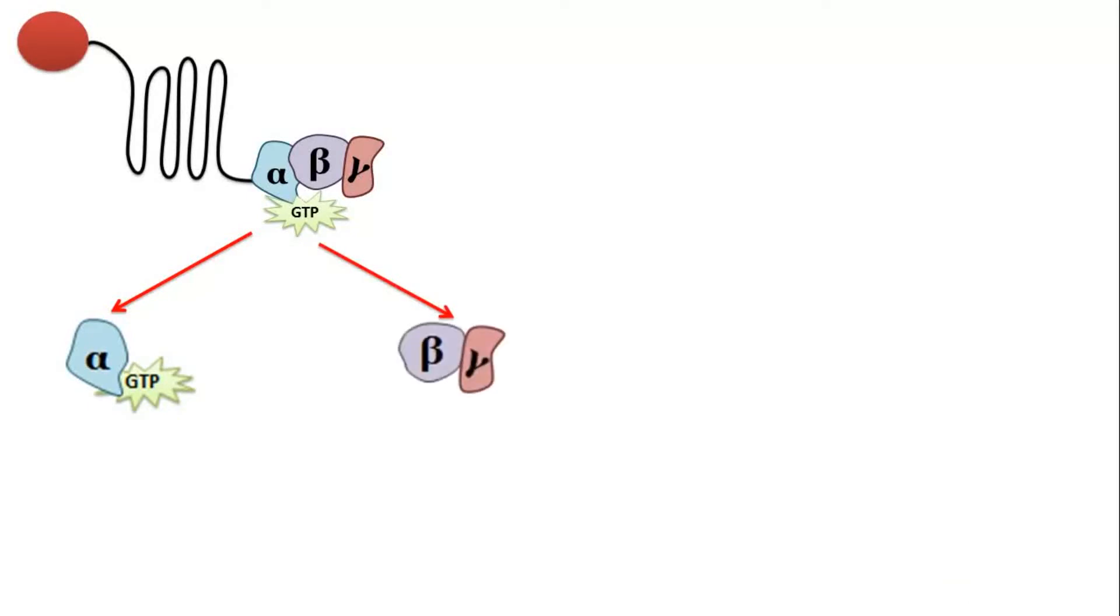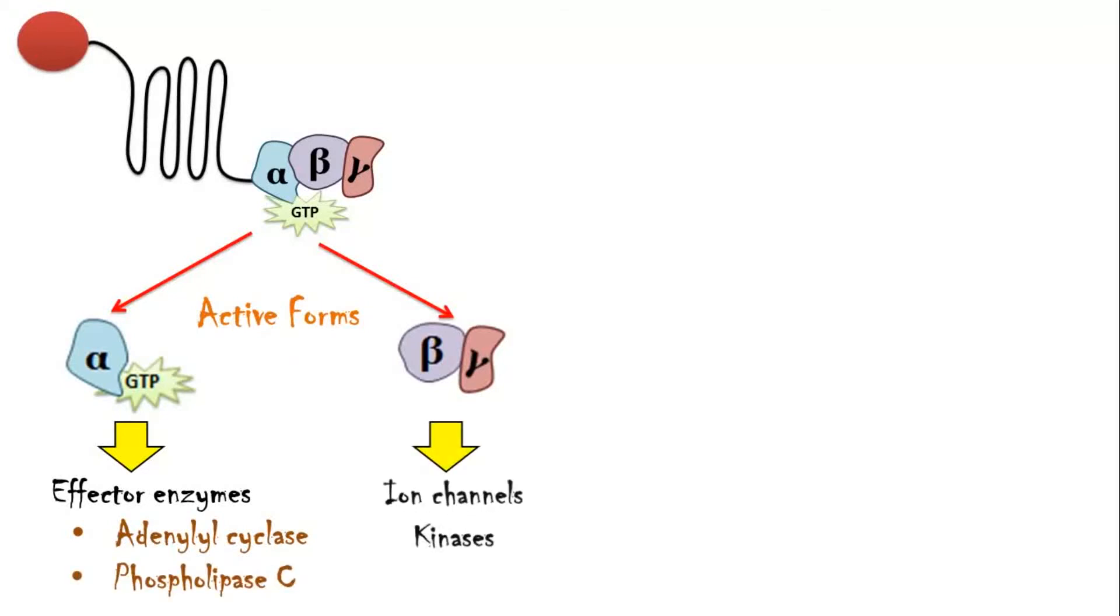Alpha-GTP and beta-gamma dimer are the active forms of the G-protein. Alpha-GTP can bind with effector enzymes like adenyl cyclase and phospholipase C and activate them. Beta-gamma subunit mainly binds to ion channels or kinases and activates them.